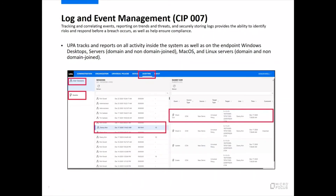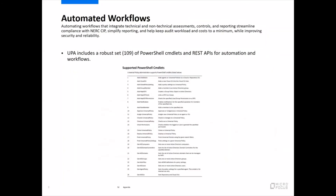For log and event management, SIP 007, UPA tracks and reports on all activity inside the system as well as on the endpoint — Windows desktop servers, both on-premise and in the cloud, Mac OS and Linux servers. We have audit logs that you can bring into your SIEM systems for tracking to make sure policies are in effect on those systems.